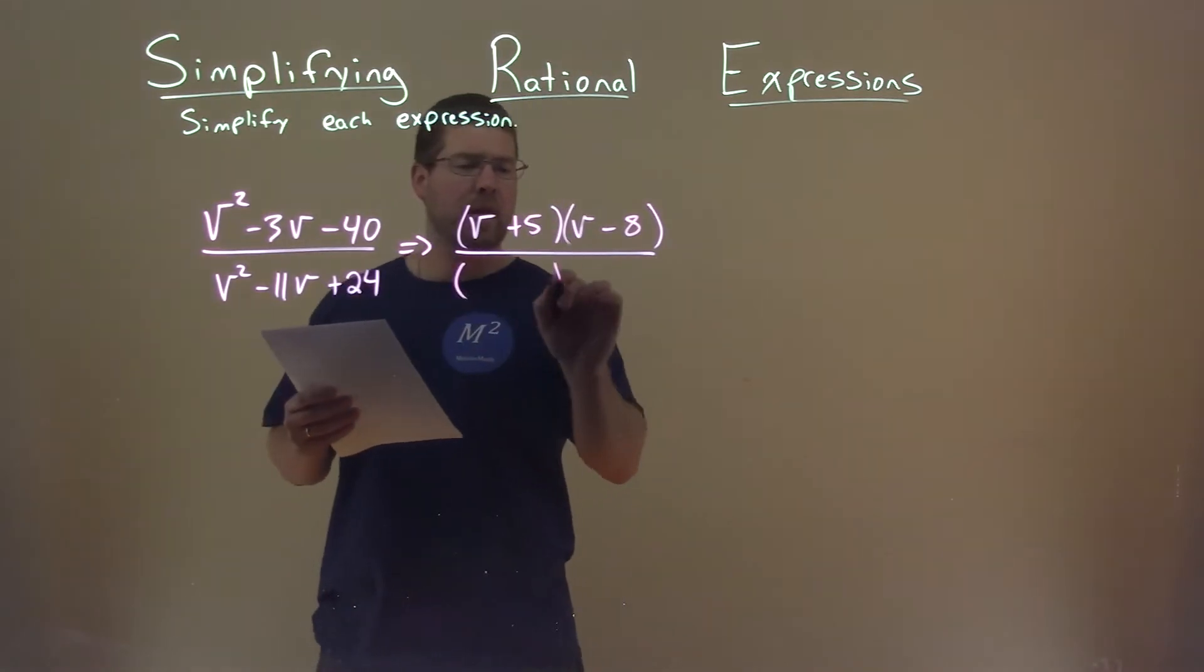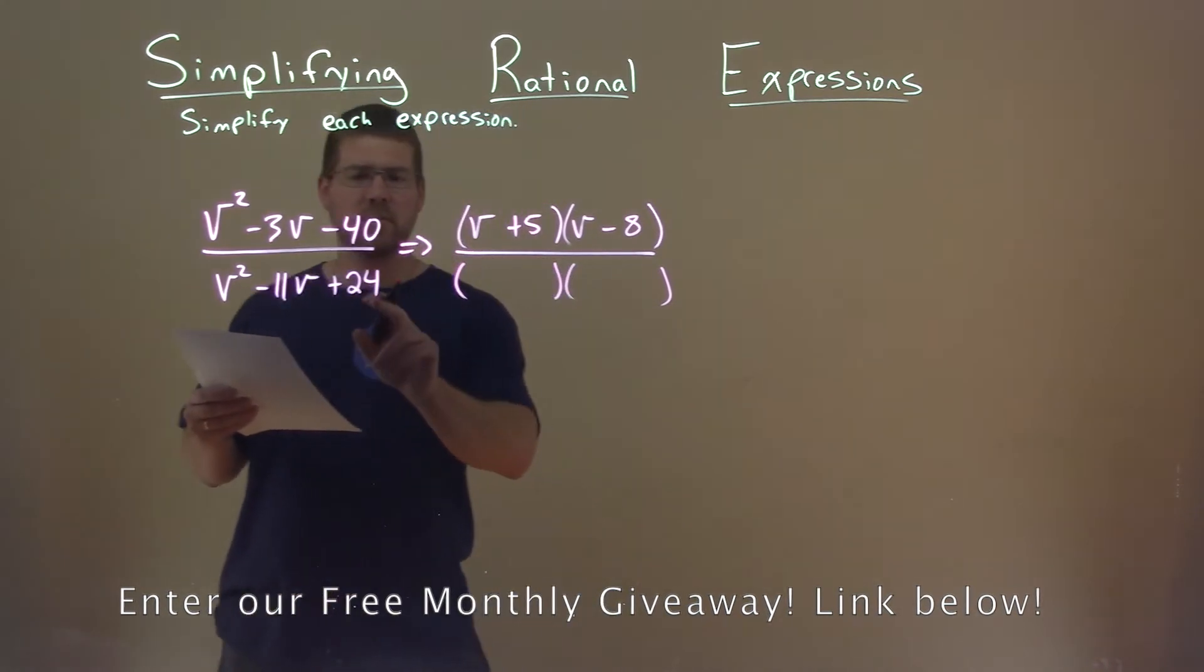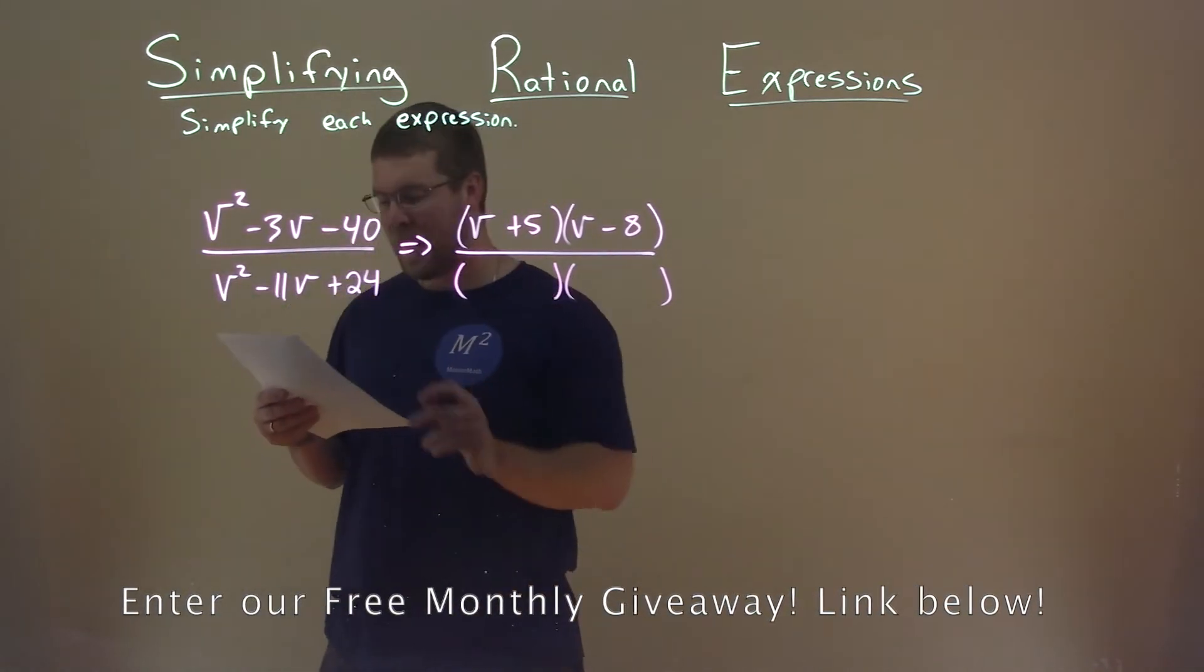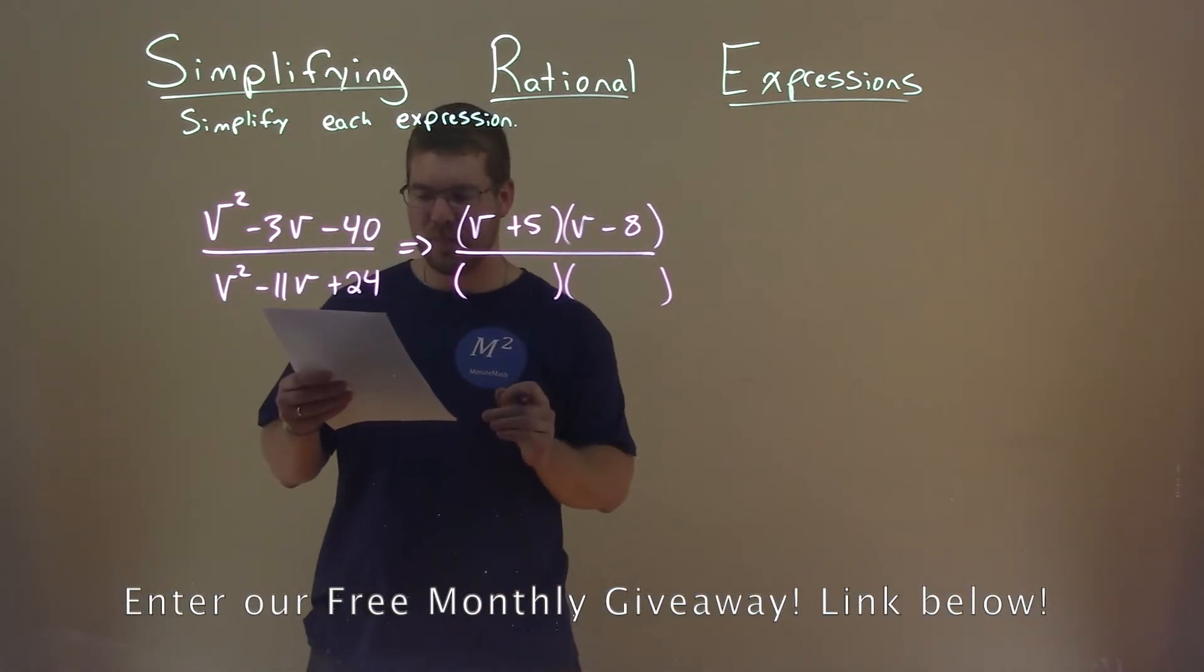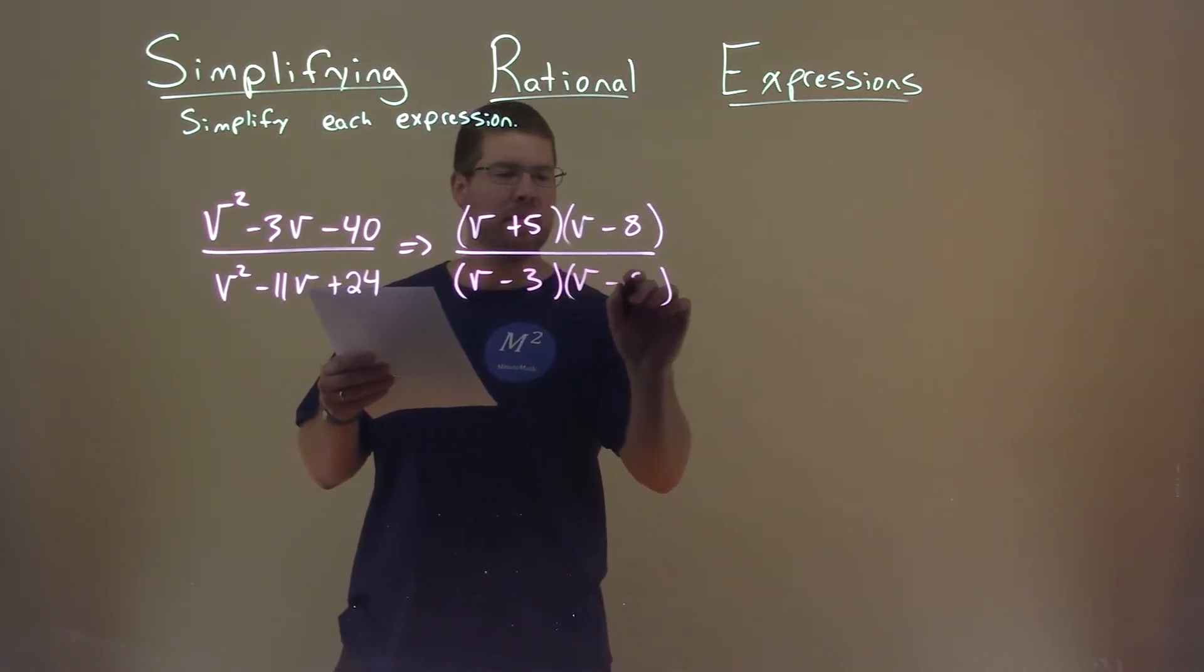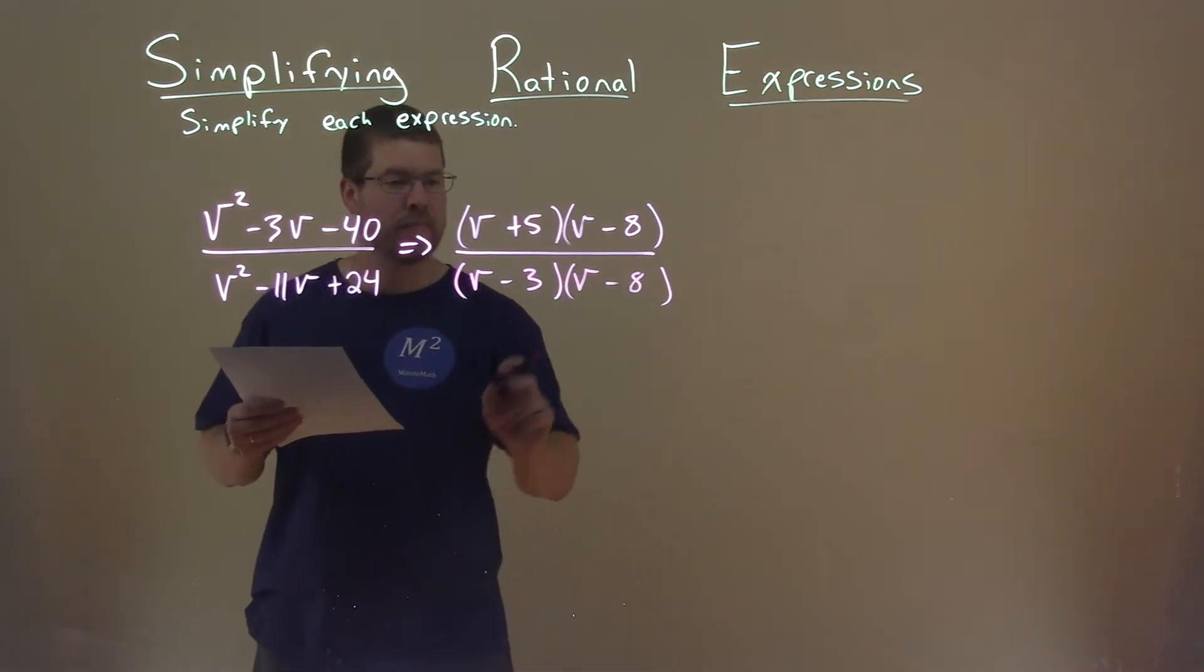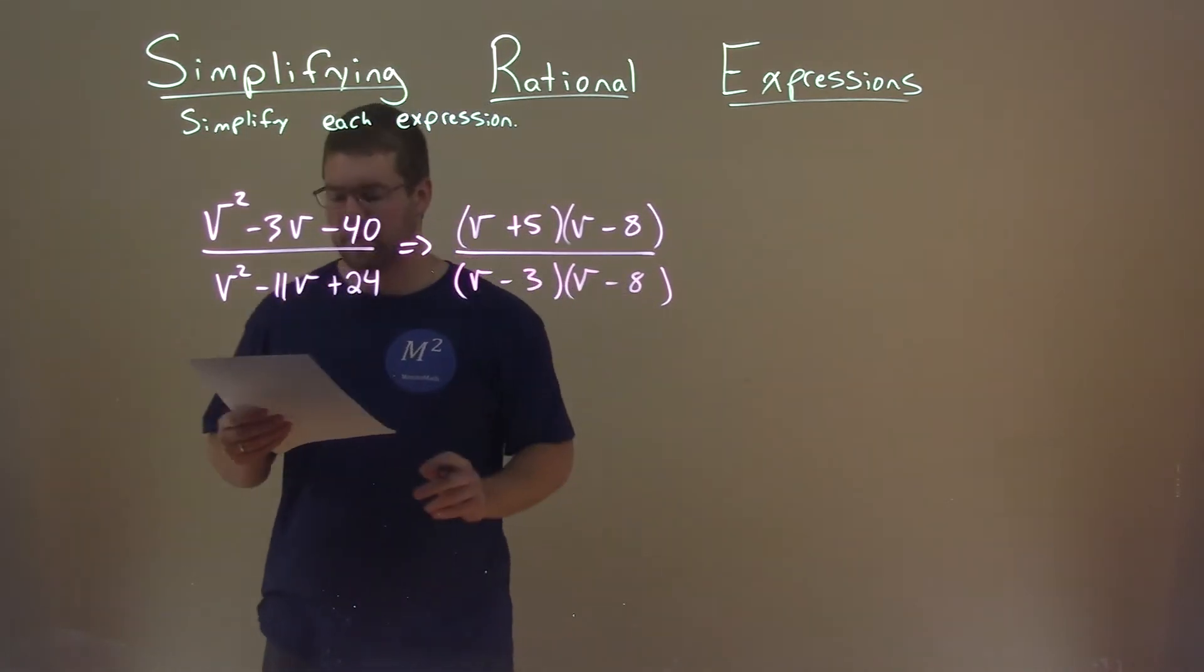The denominator now looks like it also can factor fairly easily. What two numbers multiply to be positive 24 but add to be negative 11? And that's a v minus 3 and v minus 8. Negative 3 times negative 8, positive 24. We add the two, we get negative 11.